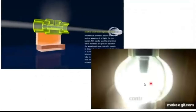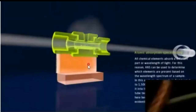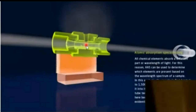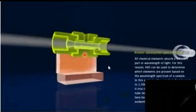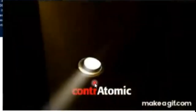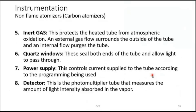Observing the diagram and animations: the heating starts, the sample converts into vapor, an atom cloud forms in between, and then electromagnetic radiation passes through it and the reading is taken. The key components are the graphite tube, quartz windows, electrical contact cylinders, water-cooling housing, inert gas flow, power supply, and detector.